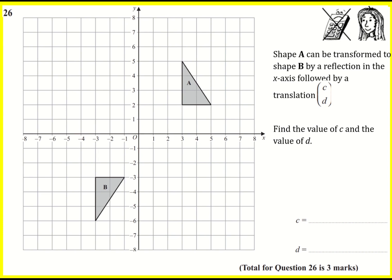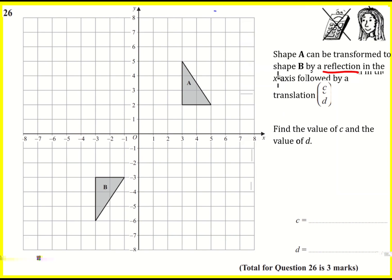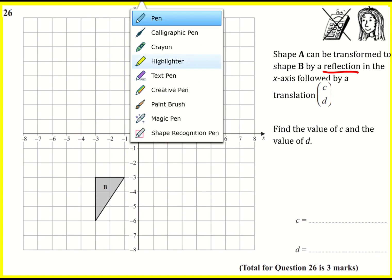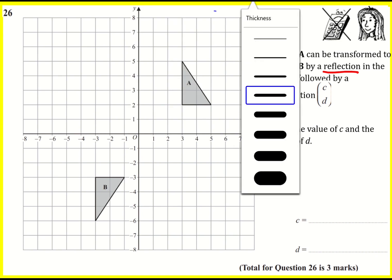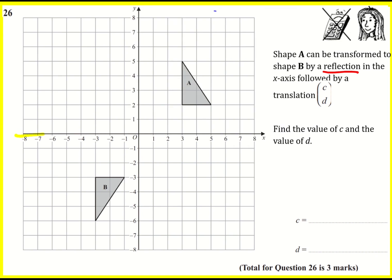I'm going to perform a reflection. There are several methods you can use to reflect a shape, but for the purposes of this video I'm going to show you by counting squares. We are reflecting firstly in the x-axis, which we need to identify — this one here is the x-axis. So I'm basically flipping this triangle over the x-axis.